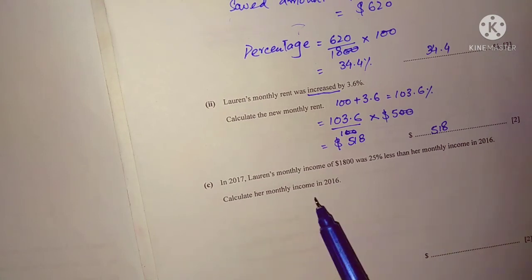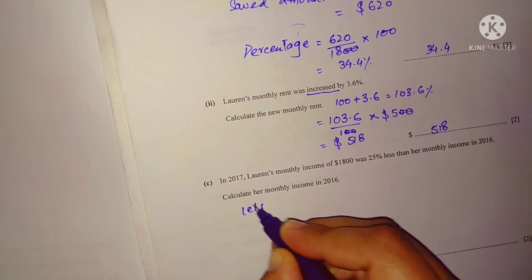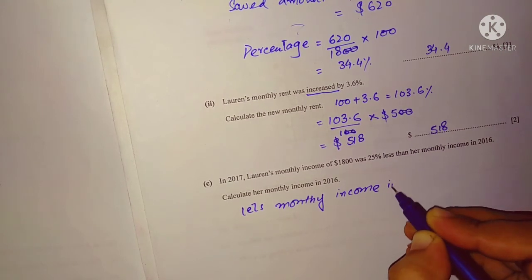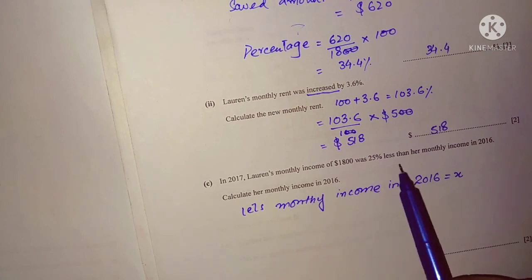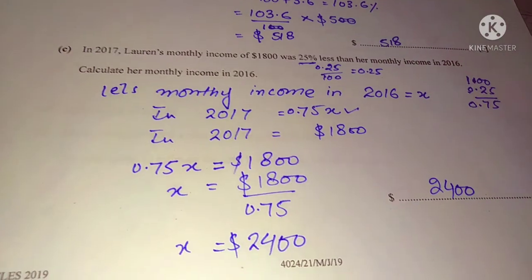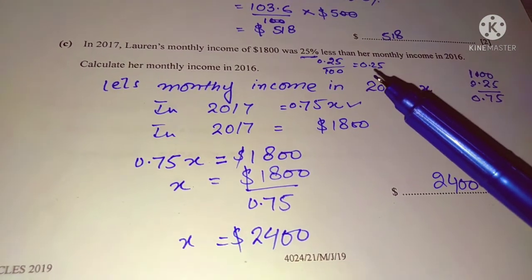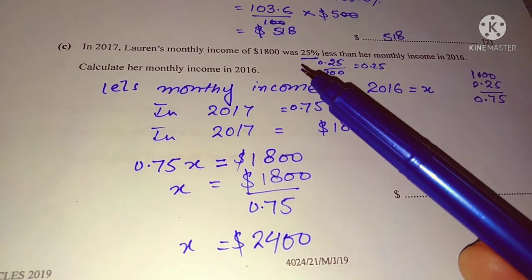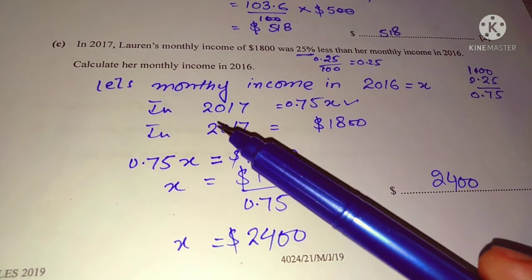We do not know the income in 2016, so we assume the monthly income in 2016 is x. Since 2017 income is 25% less than 2016, first convert 25% to a decimal: 25 ÷ 100 = 0.25. Subtract from 1.00: 1.00 − 0.25 = 0.75. We subtract because the income is 25% less, so the 2017 income equals 0.75x.